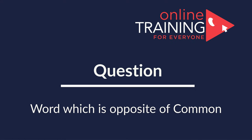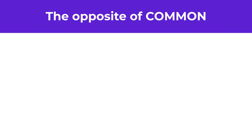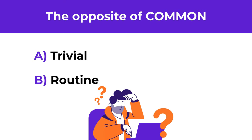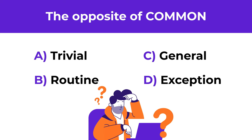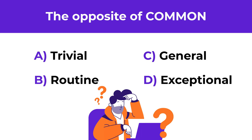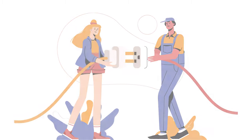Here's an interesting question where you need to select the word which is the opposite of the word 'common.' You have four choices: choice A, trivial; choice B, routine; choice C, general; choice D, exceptional. Give yourself a little bit of time — maybe pause this video. Keep in mind that during the real test you can't use the internet or your smartphone.